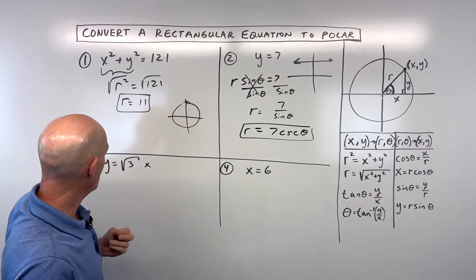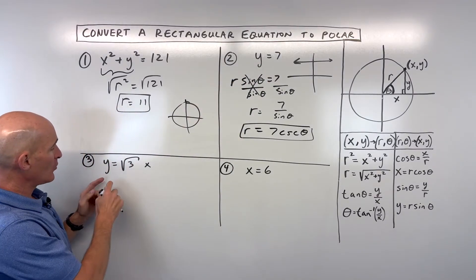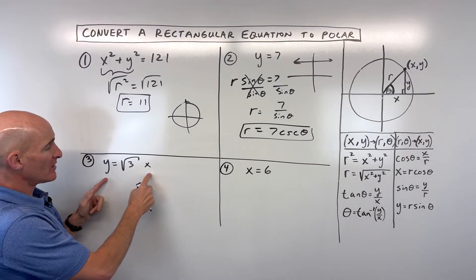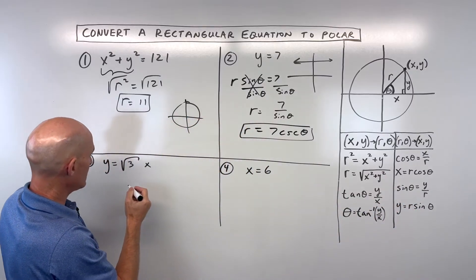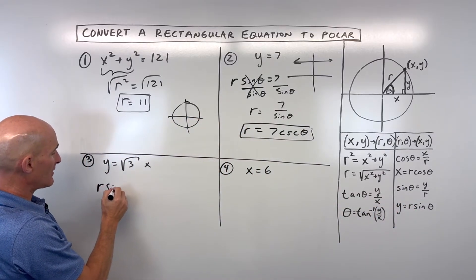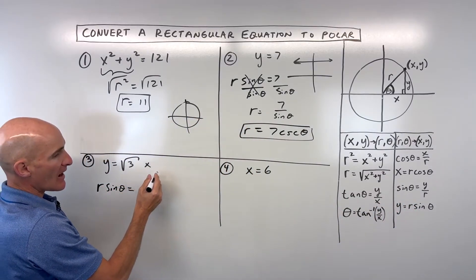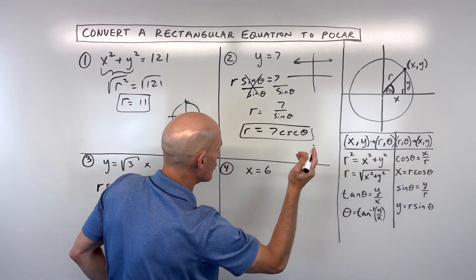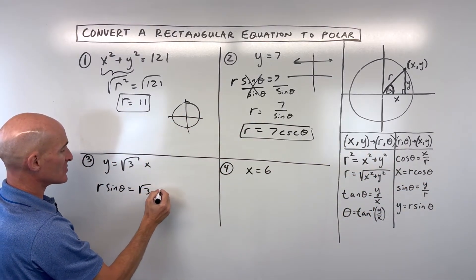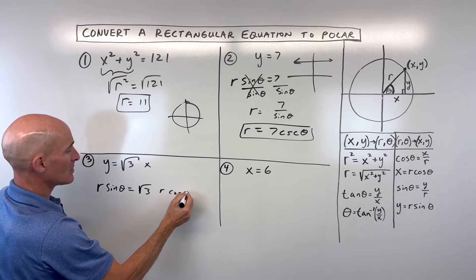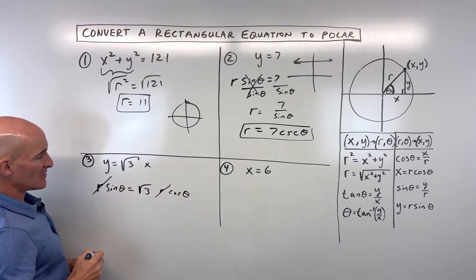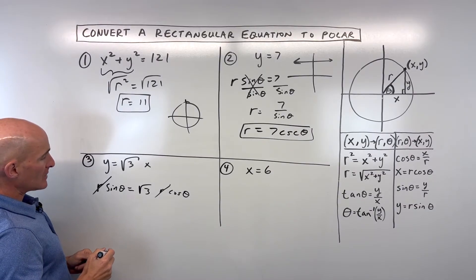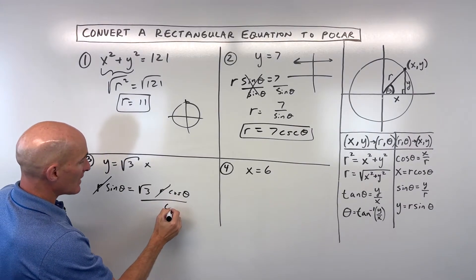Let's look at example number 3. Now this one, we have y equals square root of 3x. So this one, we know that y is equal to r sine theta. So let's go ahead and make that substitution. x is equal to r cosine theta. So let's make that substitution. We can divide both sides by r. So that cancels out. And we could divide both sides by cosine theta.